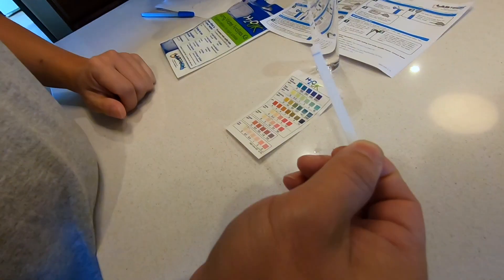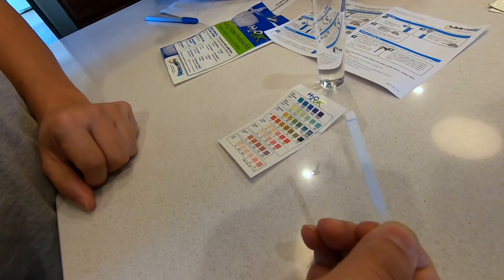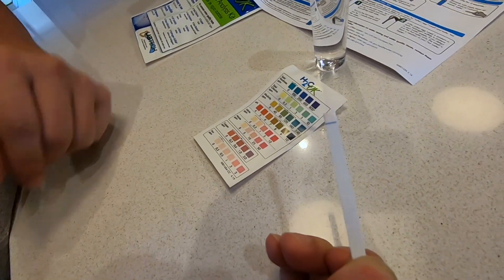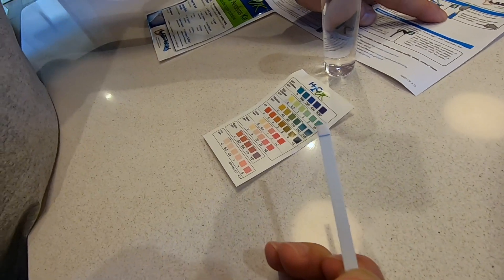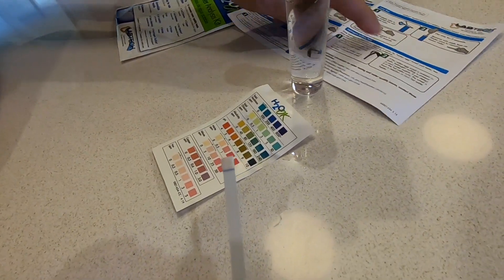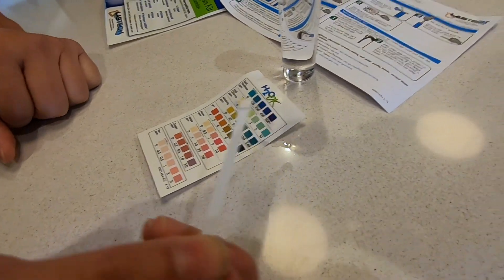We are going to do the iron test next. I already removed the pad from the iron test packet. The instruction says dip for two seconds, remove face up, shake once, and then we have to wait 60 seconds.